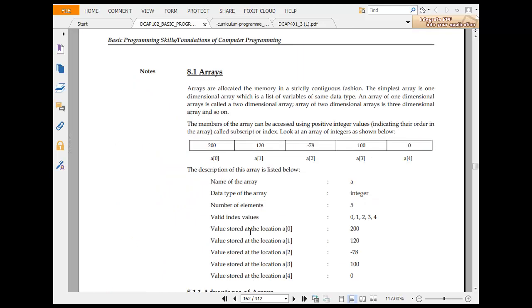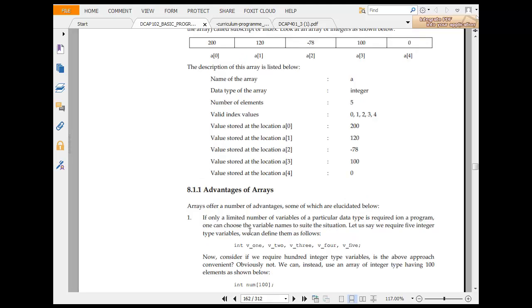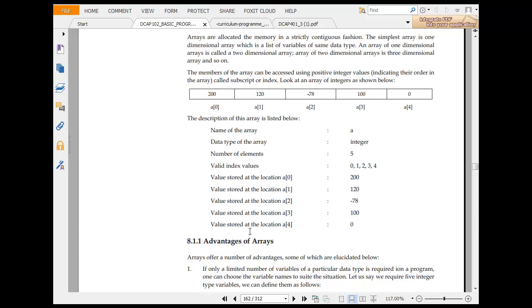So arrays are located in memory in strictly contiguous locations. The simplest form of array is one-dimensional array, which is a list of variables of same data type. So name of the array a, data type integer, number of elements 5, values indexed, a2, a3 and location.